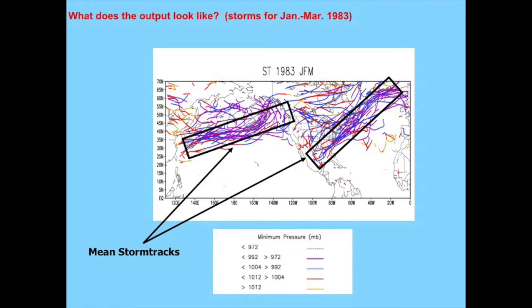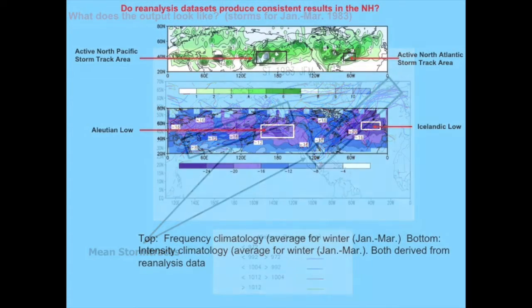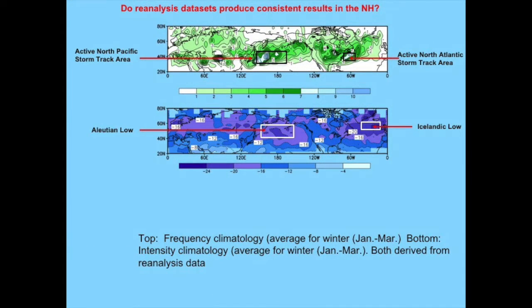Another piece of data I had is intensity. I did the same thing — I also get an average intensity of storms. Here's what that would look like using a reanalysis dataset.